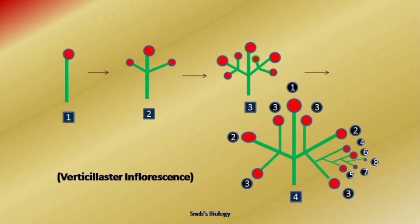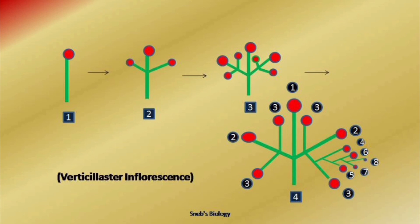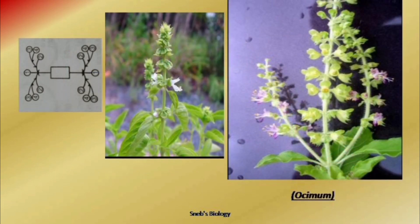In cymose inflorescence, the main axis always terminates into a flower — here also the main axis ends with a flower. The branching is two every time, so this is biparous cyme. The second time there is branching, again two branches arise and terminate into a flower. After this, only one branch is produced each time, going in a zigzag manner — that means it behaves like uniparous scorpioid cyme. So this inflorescence is biparous for one or two times and then uniparous scorpioid, and is mainly found in plants of the Lamiaceae family.